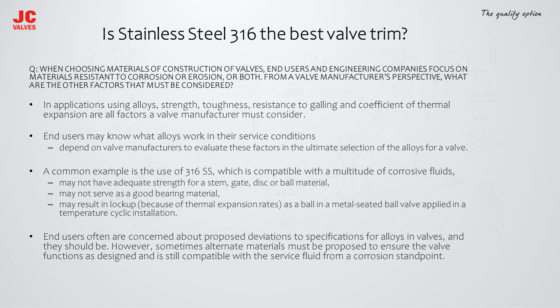When choosing valve materials, end users focus on corrosion and erosion resistance, but valve manufacturers must also consider strength, toughness, resistance to galling, and coefficient of thermal expansion. A common example is SS316, which is compatible with many corrosive fluids but may not have adequate strength for a stem. Gate disc or ball material may not serve as a good bearing material or may result in lockup due to thermal expansion rates in temperature-cyclic installations. End users are rightly concerned about deviations to alloy specifications, but sometimes alternate materials must be proposed to ensure the valve functions as designed while remaining compatible with the service fluid.